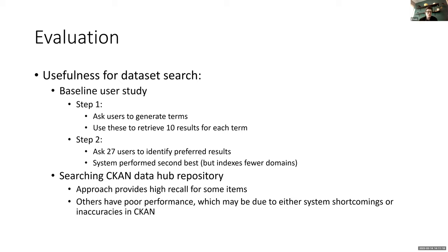For a usefulness study, they conducted a two-step user study. In step one, they asked users to generate terms for describing a domain and used those to retrieve 10 search results per term. In step two, 27 users identified preferred results. Their proposed system performed second best but indexes fewer domains. Looking at a CCAN data hub repository search, the approach provided high recall for certain domains but poor performance for others, possibly due to system shortcomings or inaccuracies in the data.